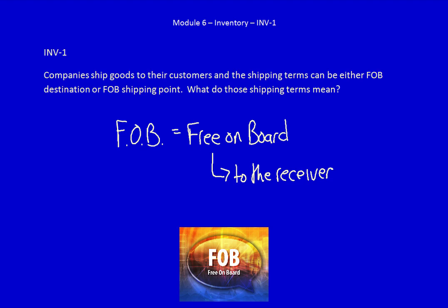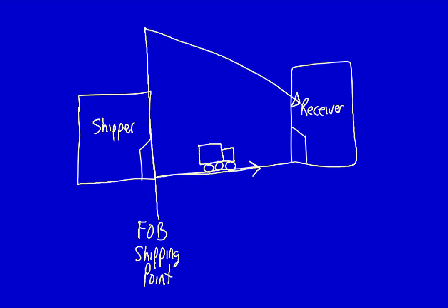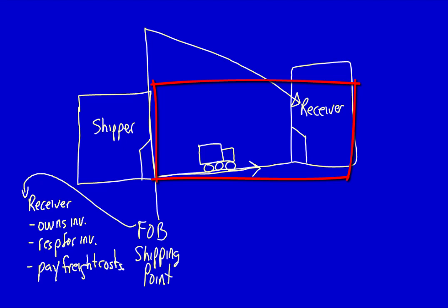Let's use a diagram to explain FOB destination and FOB shipping point. It makes sense that FOB shipping point is at the doors of the shipper's location — that's why it's called shipping point. If we tie in the definition of FOB, free on board, this means that shipping is free to the receiver only until the shipping point. The moment it leaves the shipper's doors, the receiver is responsible for it.